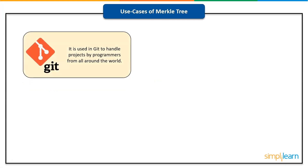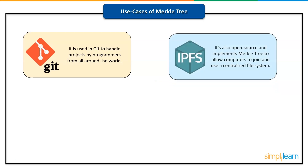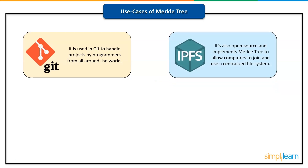There are many Merkle tree implementations out there, yet a distributed version control system is one of the most widely used. It is used to handle projects by programmers from all around the world. The Interplanetary File System, a peer-to-peer distributed protocol, is another suitable implementation. It's also open source, allowing computers to join and use a centralized file system.